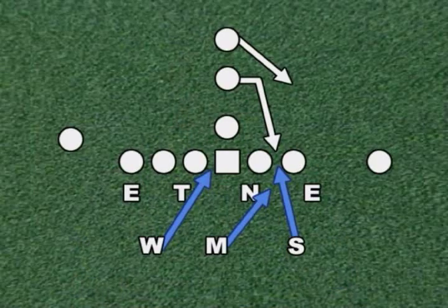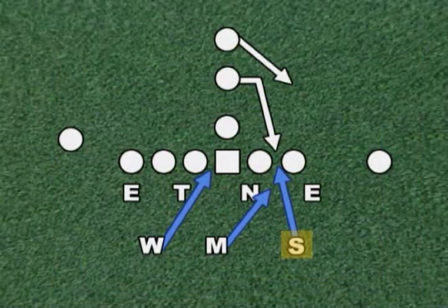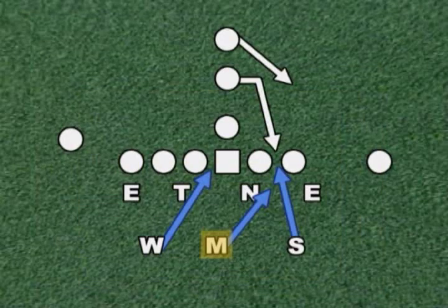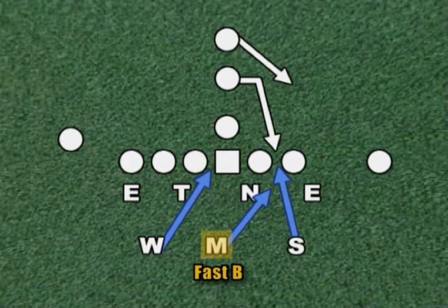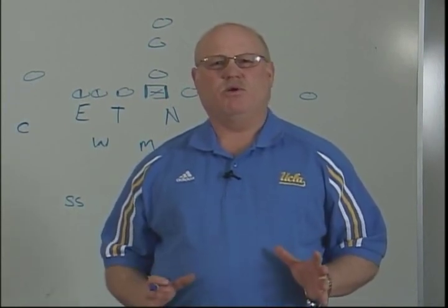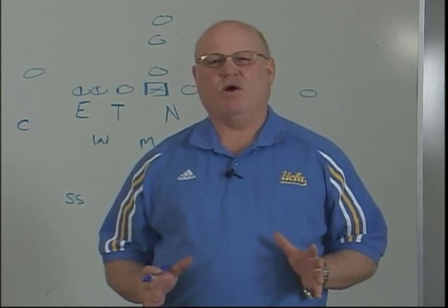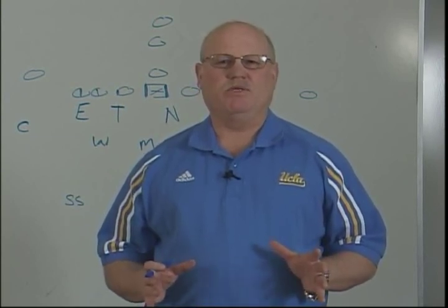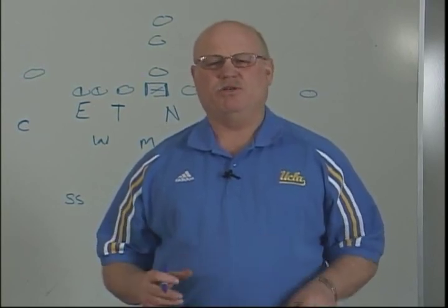As the linebackers read the flow, our Sam backer reads the track of the fullback, and as the fullback comes at him in an iso or lead-weak situation, he steps up and takes on that fullback in what we call a box technique — turning the ball back inside, taking it on with his inside arm, keeping his outside arm free. Our Mike backer, reading the flow away from the tight end, becomes what we call a fast-B player and gets up into that B gap right away. The quicker we can get the Mike backer into that gap, the quicker we demand the offensive lineman to come off the double team — that forces the guard off and allows our nose man to get penetration and be strong in the A gap. If the offense maintains the double team longer, the Mike backer should be in position to make the play.